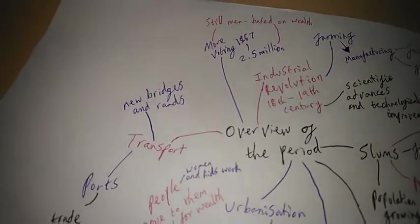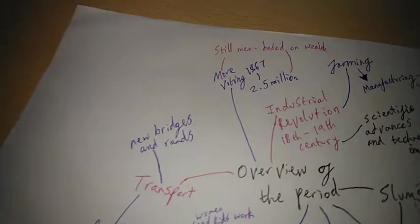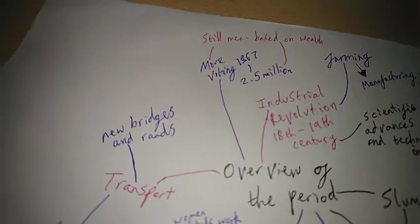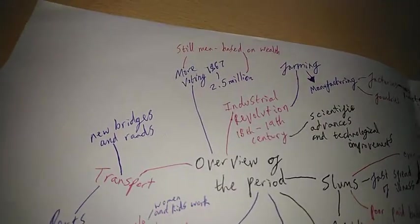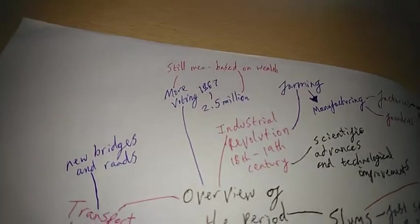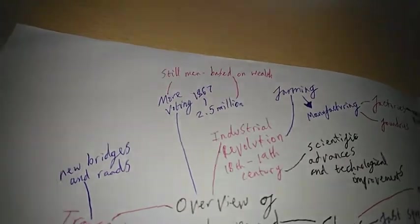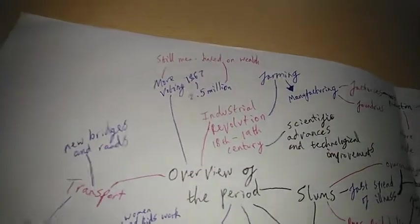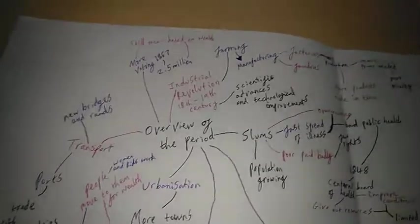There was more voting, it was still just men based on wealth. So it was still only decently wealthy men could vote. 2.5 million people in the country in 1867 had the right to vote. So it wasn't even all men, and of course women didn't have the vote yet.